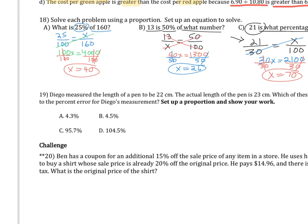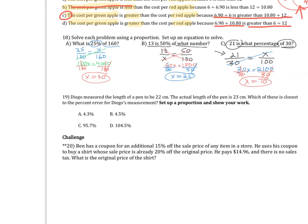Diego measured the length of a pen to be 22 centimeters, but the actual length is 23 centimeters. Which answer is closest to the percent error for Diego's measurement? We need to figure out what the percent of error is — the measured amount versus the actual amount.